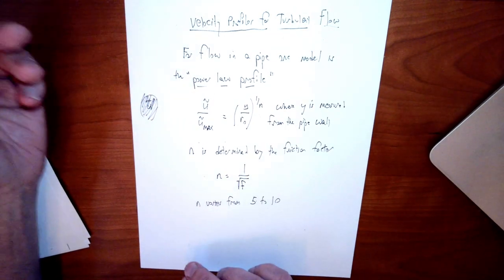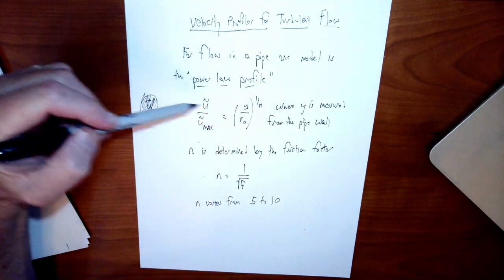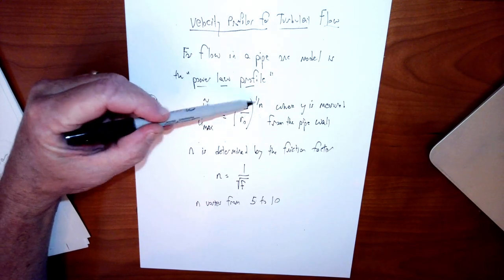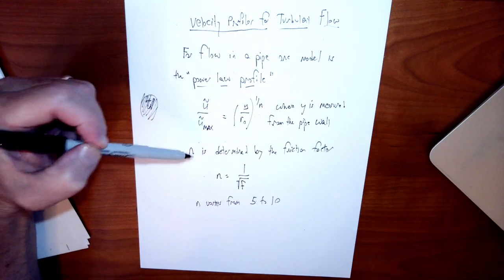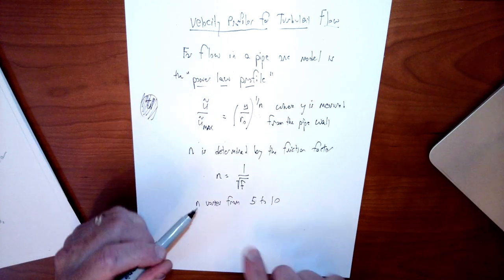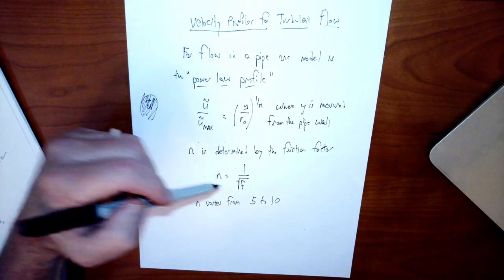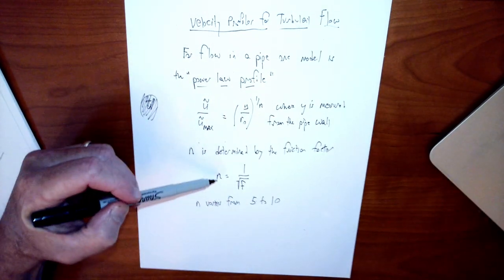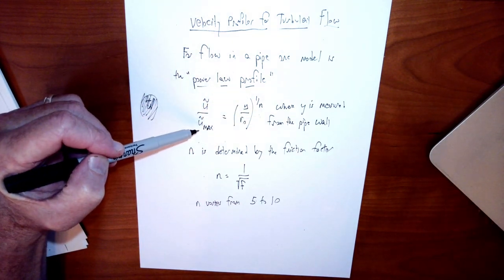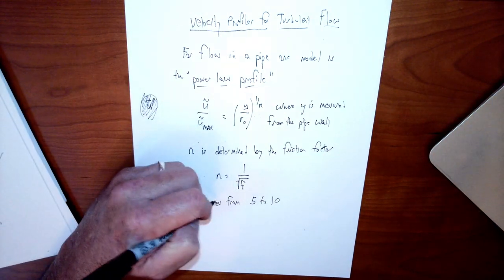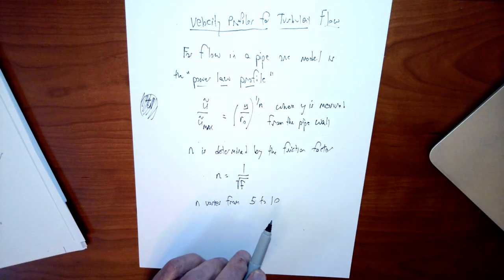We saw that it was parabolic for laminar flow, but it turns out it's not parabolic for turbulent flow. Here's one formula that gives you that: it's (y/r₀)^(1/n) — that's the power you raise y over r-naught to, to get this velocity ratio. To use this, you need n, and the n value is determined by the friction factor from the Moody diagram. n varies in pipe flow from 5 to 10, so if you get a number outside that range, you almost certainly made a mistake.